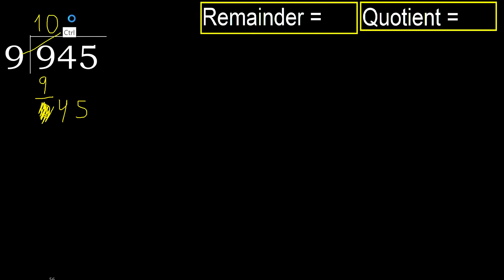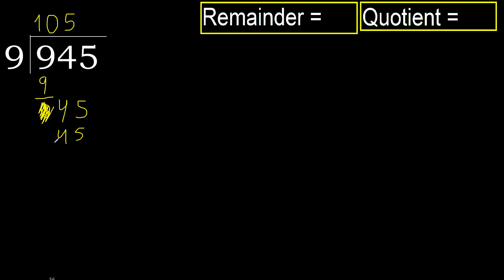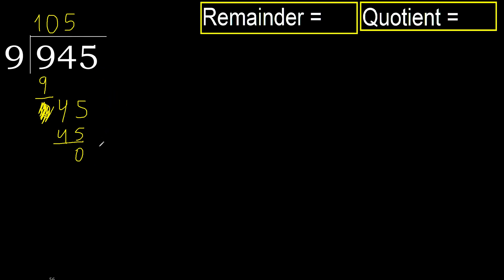9 multiplied by 5 is 45 — 45 is not greater, okay. Subtract. Next. That is not a number, therefore finish it.